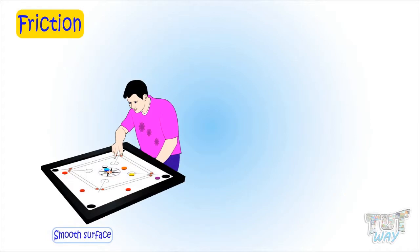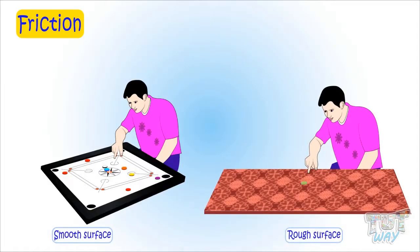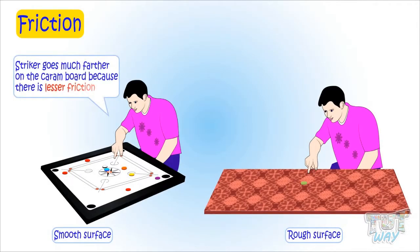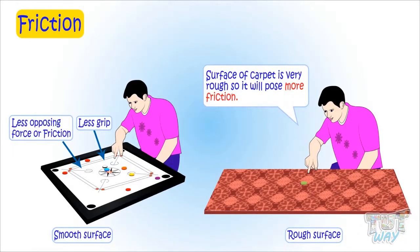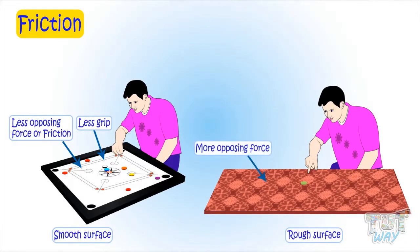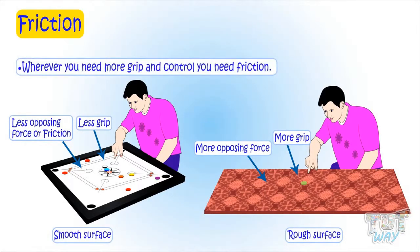Push a striker on the carom board and see how far it goes. Now push a striker on the carpet and see how far it goes. The striker goes much farther on the carom board because there is least friction — no opposing force and no grip. The surface of carpet is very rough, so it poses a lot of friction and a lot of opposing force, and there is much more grip between the striker and the carpet, so it doesn't move much. Wherever you need more grip and control, you need friction.